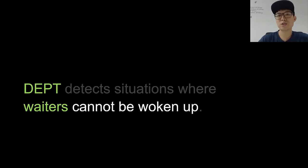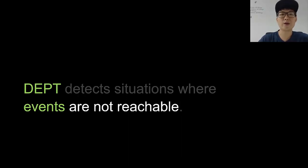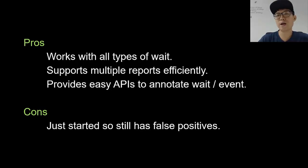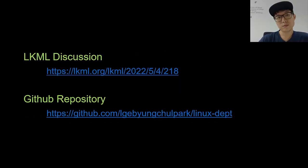DEPT detects situations where waiters cannot be woken up, or where events are not reachable. It works with all types of waiters, supports multiple reports efficiently, and provides easy APIs to annotate waiters and events. It just started, so it still has false positives. You can check the LKML discussion and source code via the provided links. I'm looking for people interested in improving this area of the kernel. Thank you.